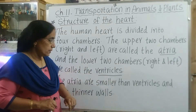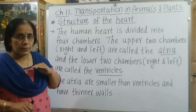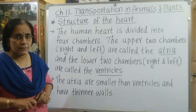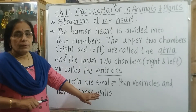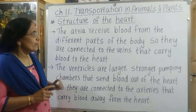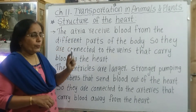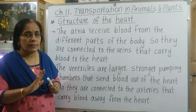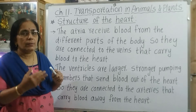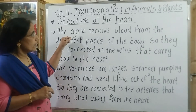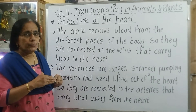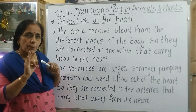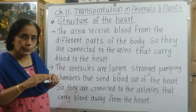The atria are smaller than the ventricles and have thinner walls. The atria receive blood from the different parts of the body, so they are connected to the veins that carry blood to the heart. The upper two chambers, called atria, receive blood from all parts of the body.